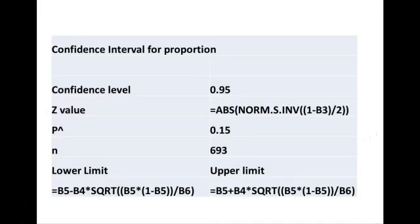So here's what a finished spreadsheet would look like in Excel. Put your confidence interval in. Here's our z value calculation. Then we would put in our p-hat or our sample proportion. In this case, it was 15%. This particular problem had a sample size of 693.